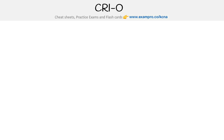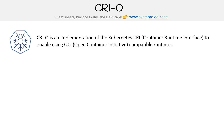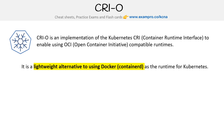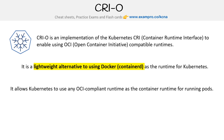Let's take a look at CRI-O. CRI-O is an implementation of the Kubernetes CRI interface to enable OCI compatible runtimes. CRI stands for container runtime interface, and OCI stands for Open Container Initiative. It's just an alternative to container D — a lightweight alternative to using Docker or container D as a runtime for Kubernetes, allowing Kubernetes to use OCI compliant runtimes for running pods.